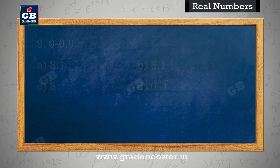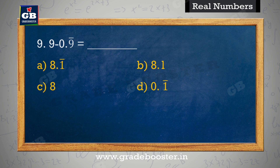0.9 bar is equal to. A. 8.1 bar, B. 8.1, C. 8, D. 0.1 bar.